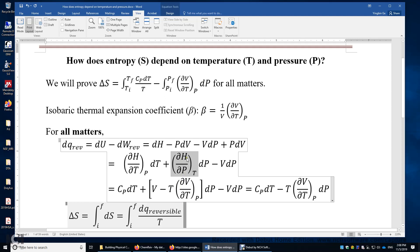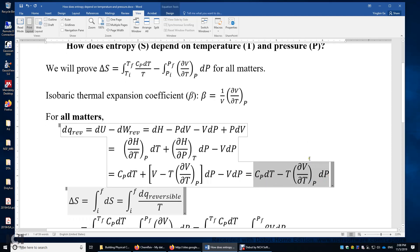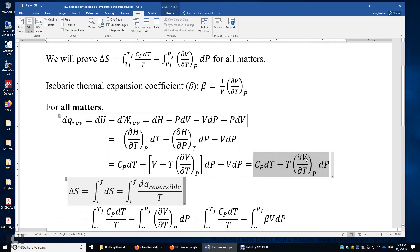We just need to expand this DH to be VDP plus TDS. And then we can see this negative VDP here cancels this positive VDP. Therefore, we have only two terms left for this DQ reversible. It's CpDT minus T times delta V over delta T times DP.